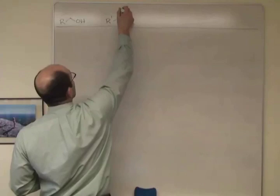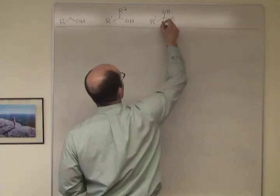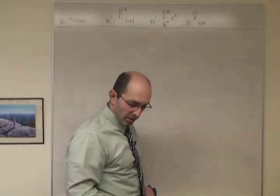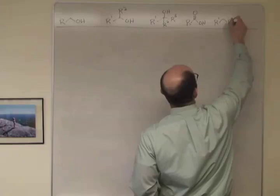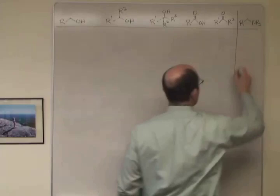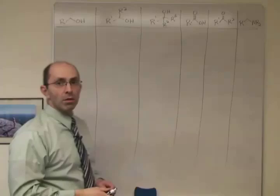You're going to have secondary alcohol, tertiary alcohol, carboxylic acid, ketone, and finally, amine. So these are all of the different functional groups you can make from our first table.